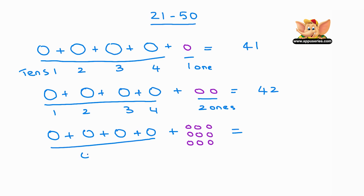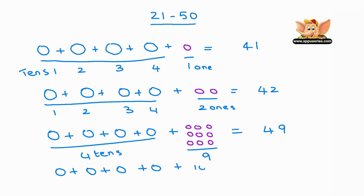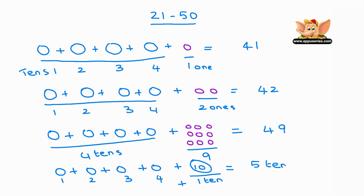Now four circles — one, two, three, four — plus one 10 equals. These are four 10s plus one more equals five 10s. So now you've reached the number 50.